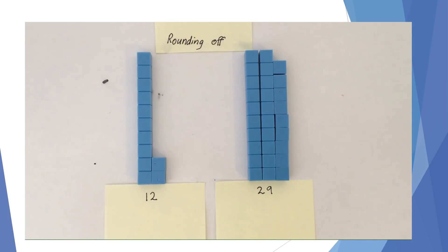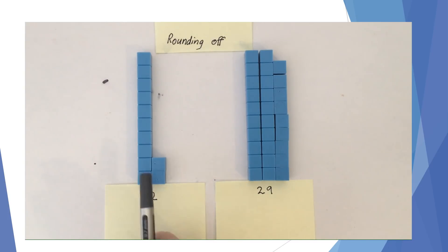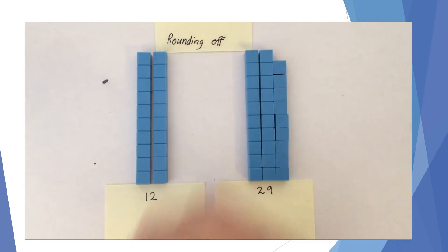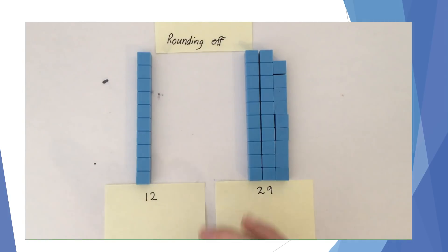When rounding a number off to a particular digit, we need to look at the digit that comes after the digit we are rounding to. These base-ten blocks that you might remember from primary school are going to help us represent that. Let's say we want to round off to tens — we'll need to look at the ones digit first. For 12, you can clearly see that 12 is closer to 10 than it is to 20.